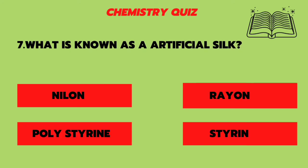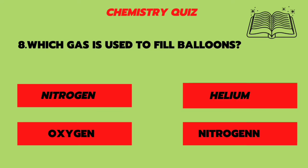Seventh question: what is known as artificial silk — nylon, rayon, polystyrene, or styrene? The answer is rayon. Eighth question: which gas is used to fill balloons — nitrogen, oxygen, or helium? Helium is the answer.